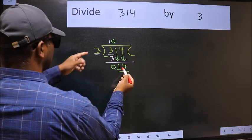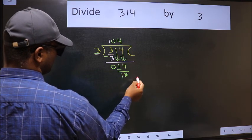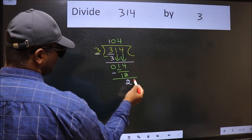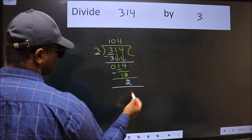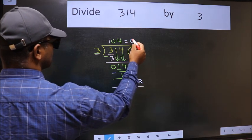A number close to 14 in the 3 table is 3 fours 12. Now we should subtract. We get 2. No more numbers to bring it down, so we stop here. This is our remainder and this is our quotient.